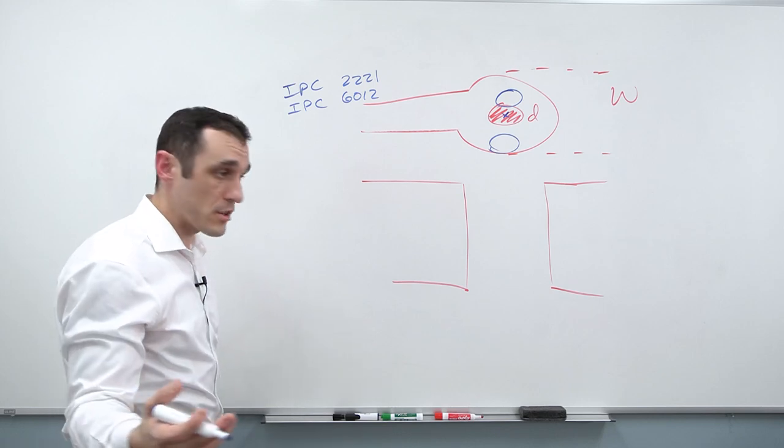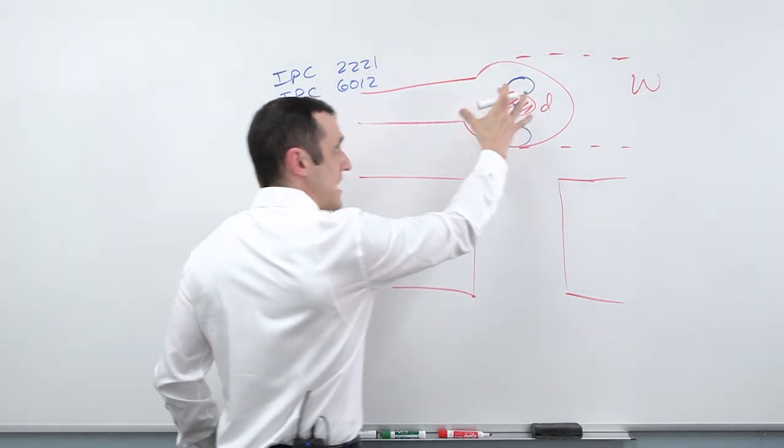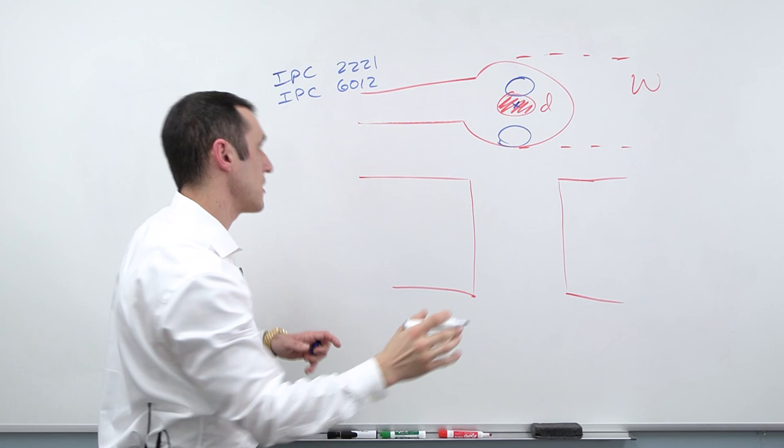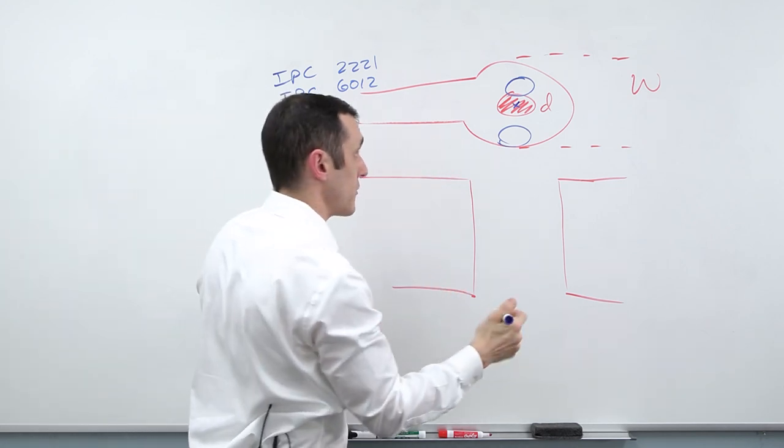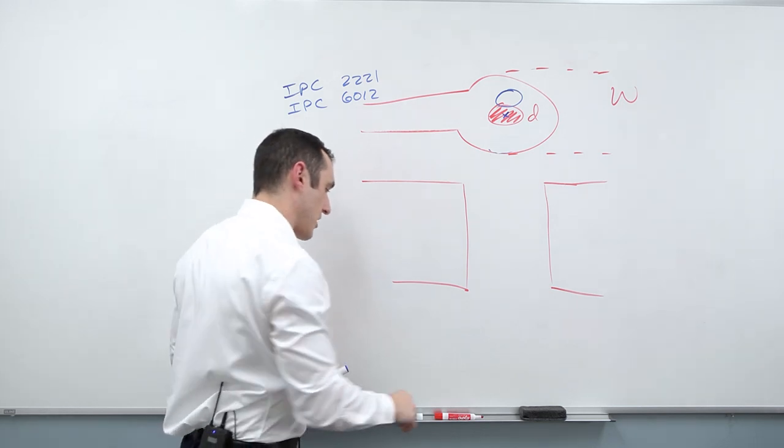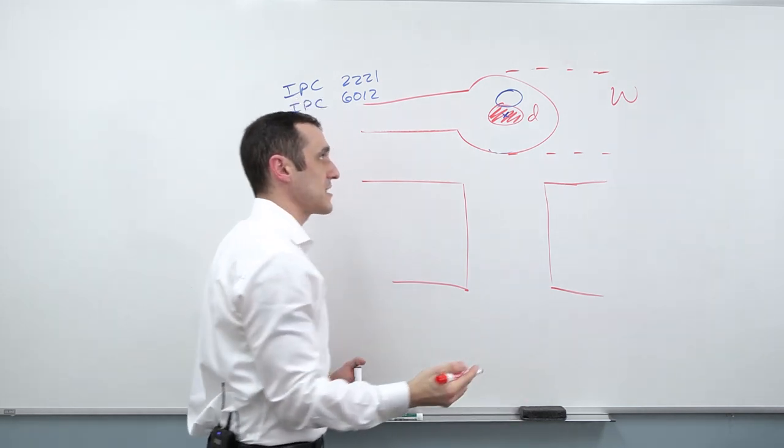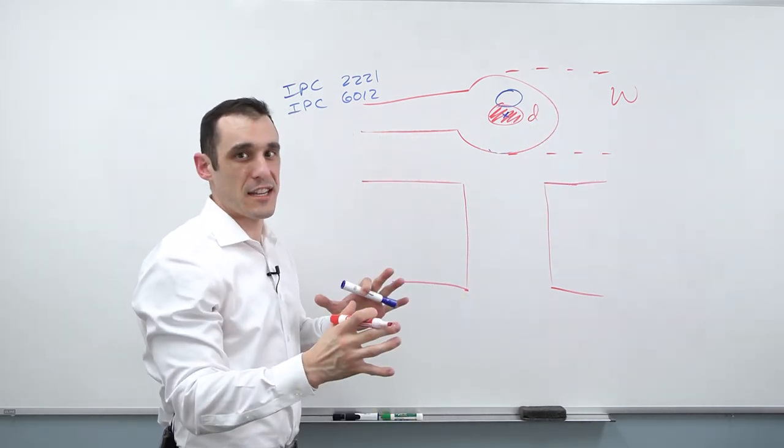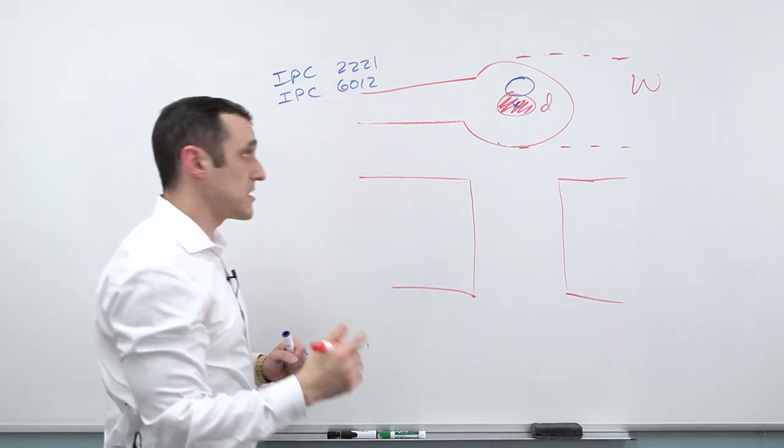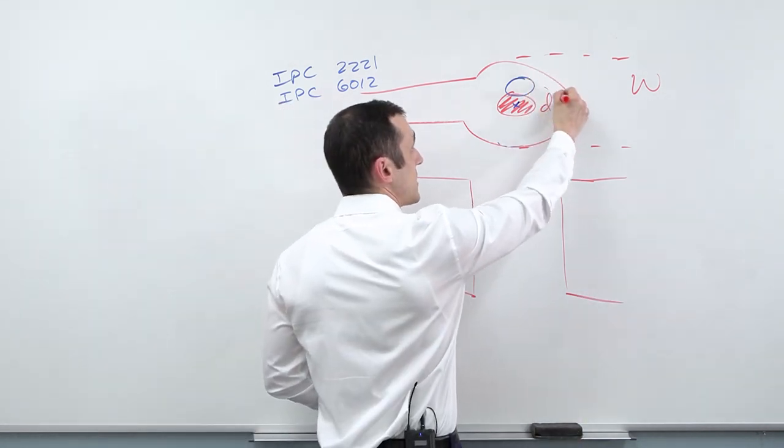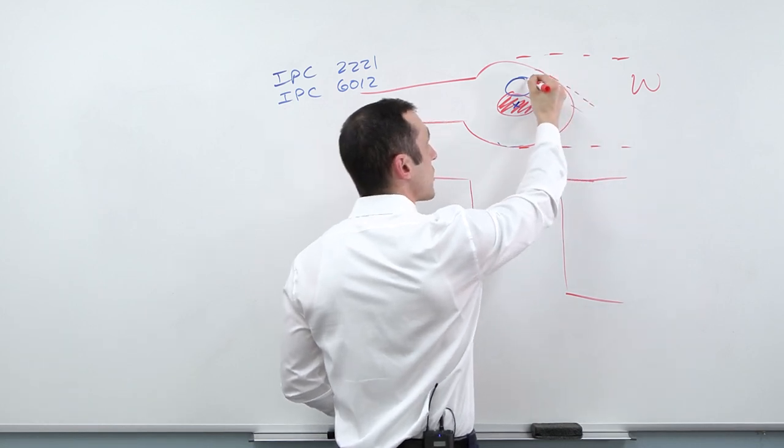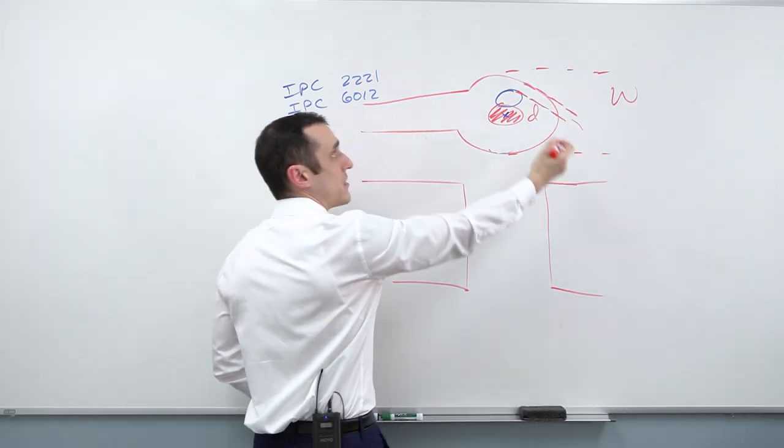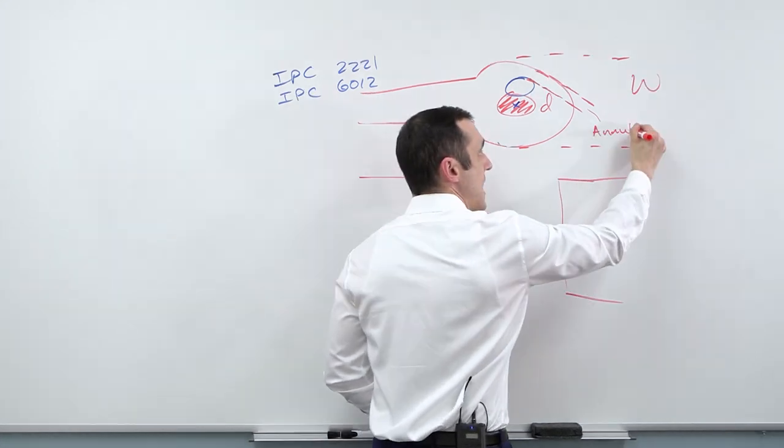I think it's kind of important for most designers to have like a bare bones understanding of some of the points in IPC standards. This is actually one of those. So this is actually related to a viewer question that we got. And the viewer question was essentially asking, what is the formula for this specific pad diameter? And the answer is that there is one, but there kind of isn't one. What there is, is there's a limit that's specified in the 6012 standards. And that limit is based on this distance right here between where the actual drill hit ends up and the edge of the pad.